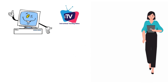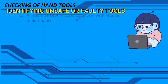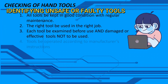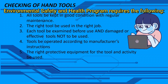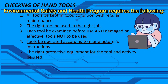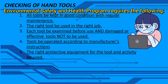And now, for the last part of our video lesson — identifying unsafe or faulty tools. Environmental safety and health programs require the following: 1) all tools be kept in good condition with regular maintenance; 2) the right tool be used for the job; 3) each tool be examined before use and damaged or defective tools not be used; 4) tools to be operated according to the manufacturer's instructions; and lastly, the right protective equipment for the tool and activity to be used.